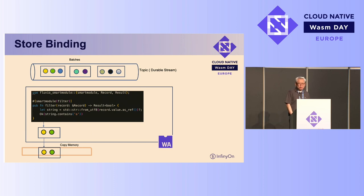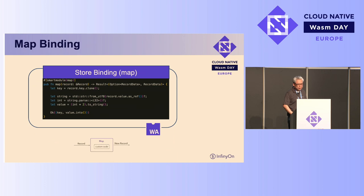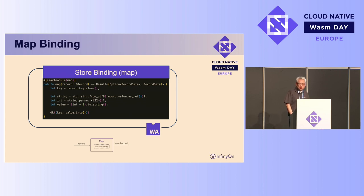After we copy and filter these records, we send them back to the host SPU and then send them downstream to consumers. The next binding is map, which is very similar to filter, except it can transform from one shape to a different shape. Because it shares the same logic as the filter map, it is essentially the same process.